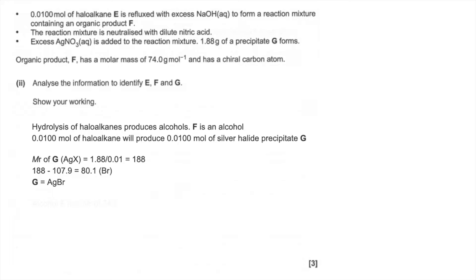So where would we go next? So we're told that alcohol F has an MR of 74. So I'm going to take off the 17 for the OH group. So I'm left with 57, so that the remainder is C4H9. So we're talking about, could it be butanol or butan-2-ol?